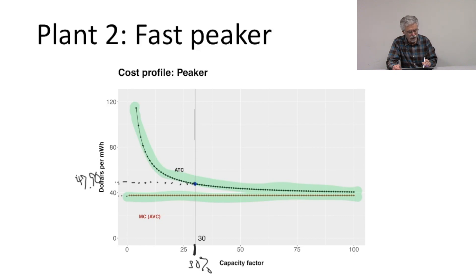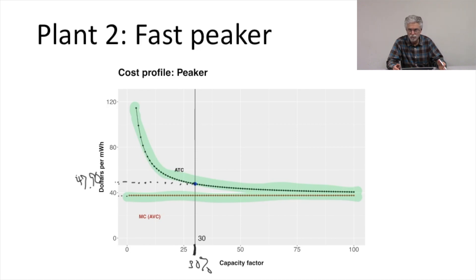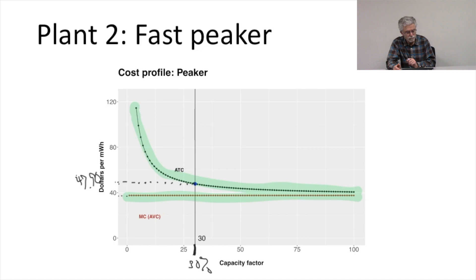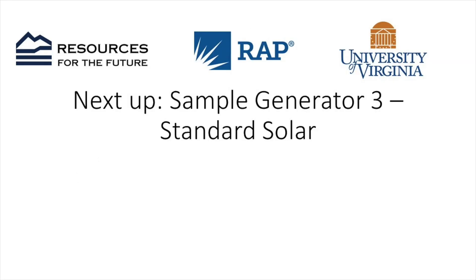Its average total cost is much higher than the average total cost of our base load power plant. But when we need a plant that we can bring online really fast — ramp up and down with our renewables — we want to have a Fast Peeker available. It won't run that much of the time, but when it runs, it'll be super valuable.